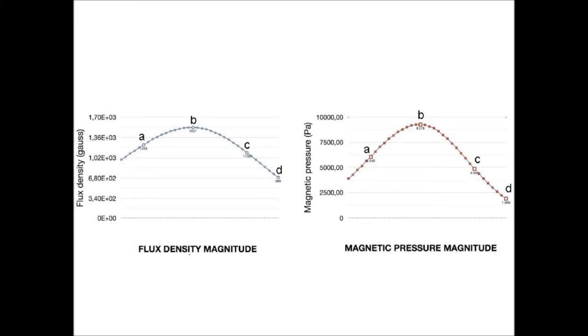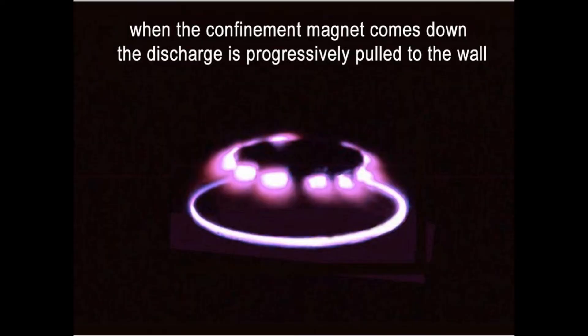Left, you have the value of the magnetic field. As you can see, it's maximum in B, and it corresponds to this part of design. And here is the value of the magnetic pressure. Here, when the confined magnet comes down, the discharge is progressively pulled to the wall.